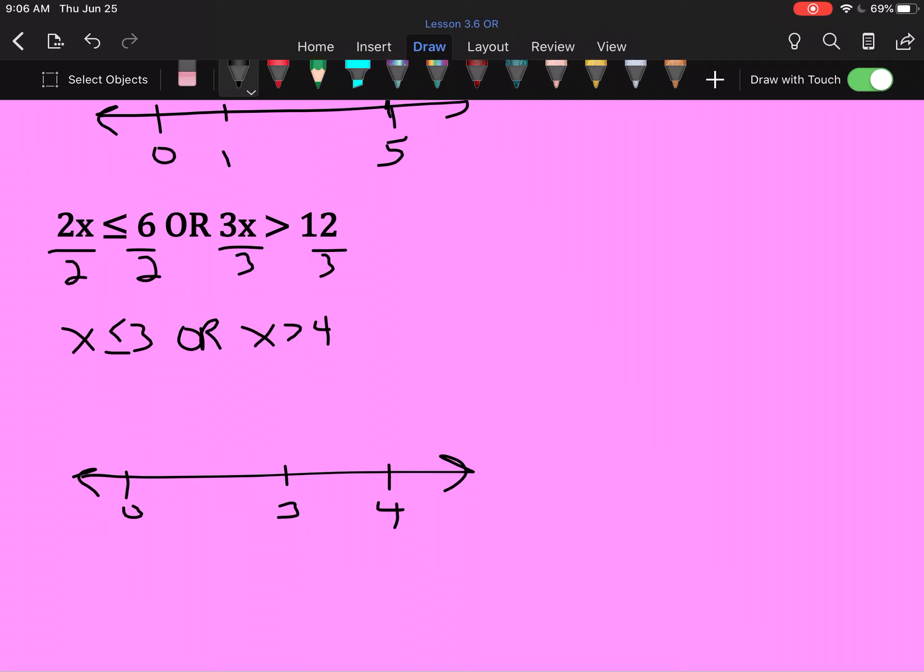So I put my number line down with 3 and 4. Less than or equal to 3 is a filled in circle, arrow to the left. Greater than 4 is an empty circle, arrow to the right.